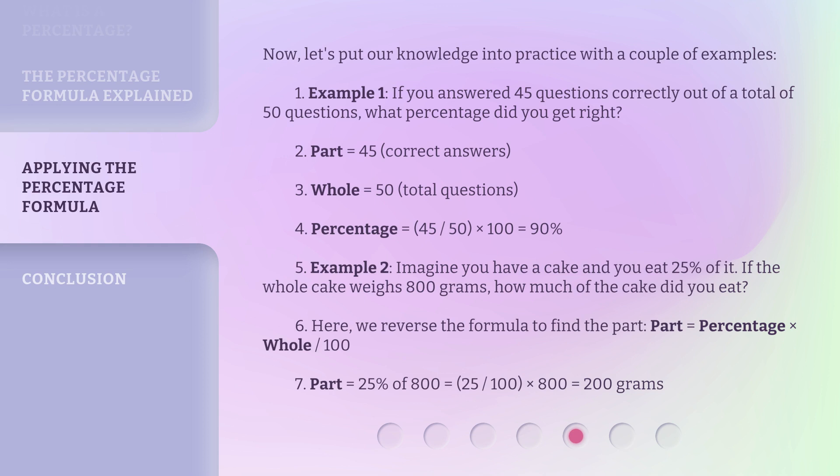Part = 45 (correct answers). Whole = 50 (total questions). Percentage = (45/50) × 100 = 90%.